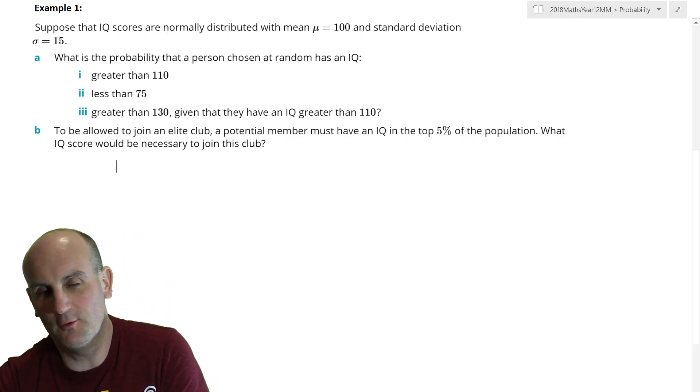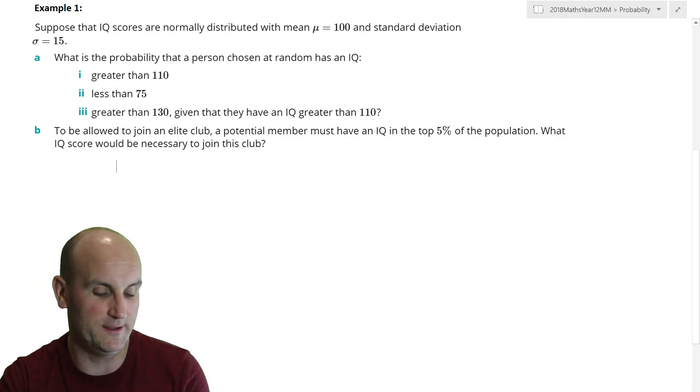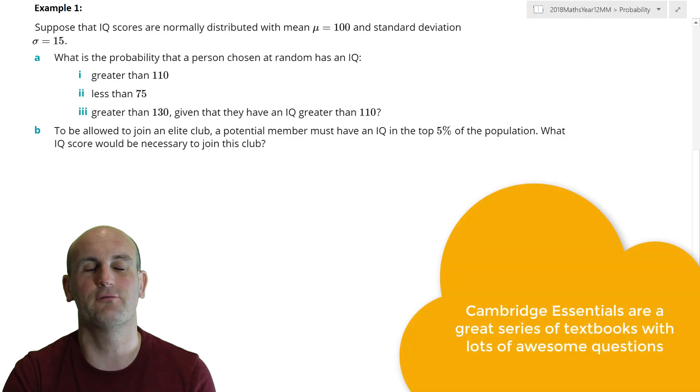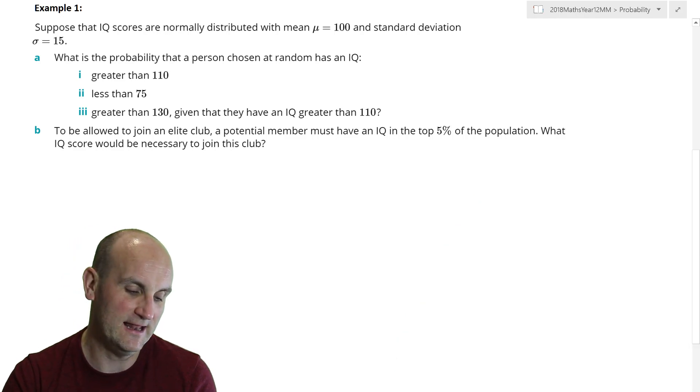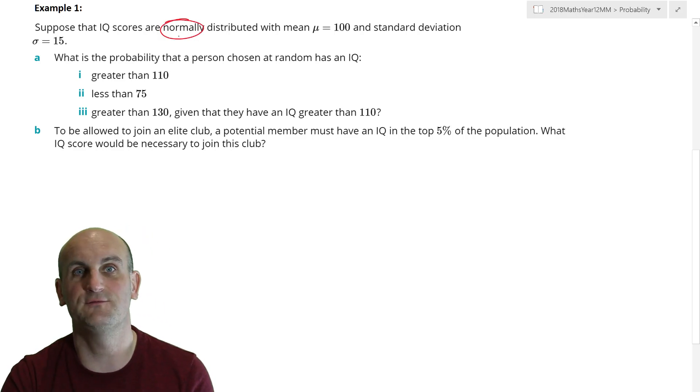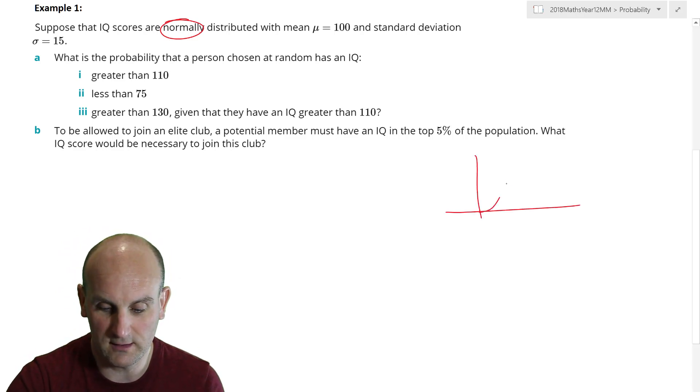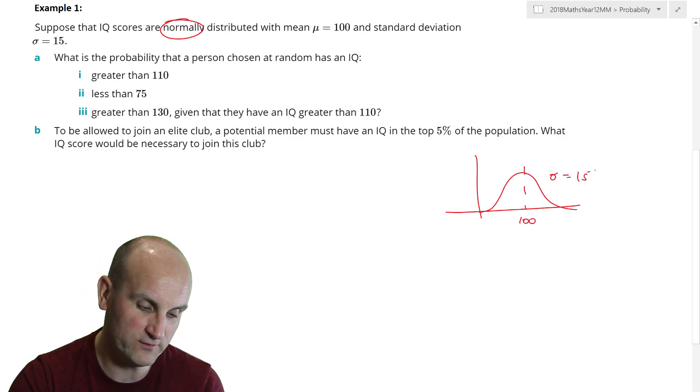So IQ scores and all this type of stuff is great exam fodder. This is taken from the Cambridge Essentials textbook series which is what I teach my kids from. Suppose that IQ scores are normally distributed. First things first, there's very little in statistics that we can actually now deal with. So normally distributed I now know that I've got a curve here. It's going to be centered with a mean of 100 and a sigma of 15.